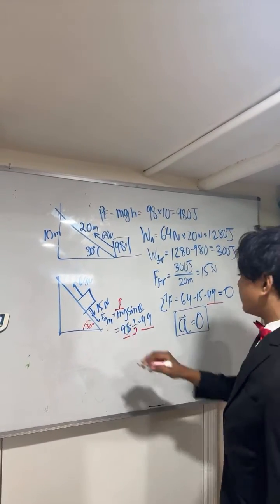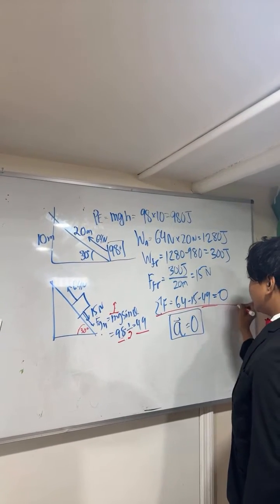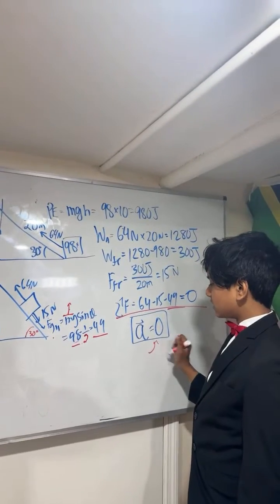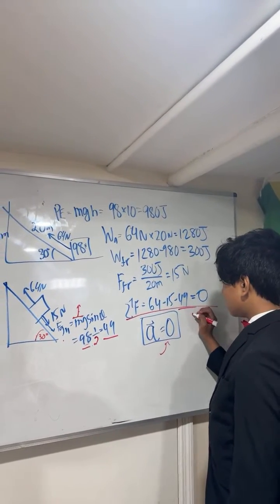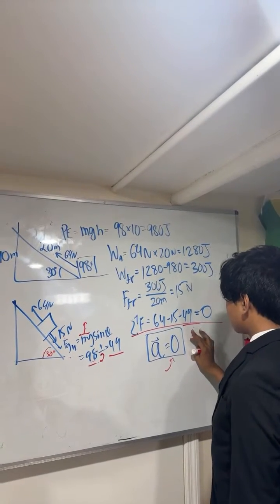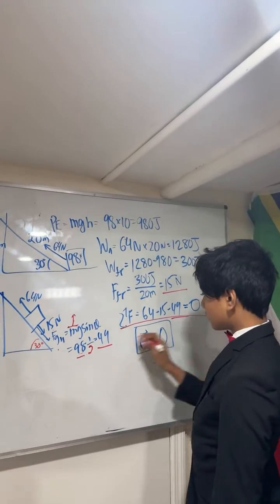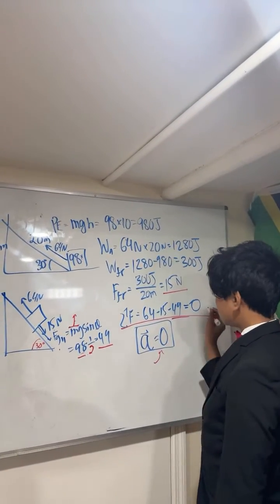49. So 49 is what? Okay, now you have to write acceleration is what? Well, the net force is zero. I think that... No, acceleration is... What did he write? He just found the net force. Okay, 64 minus 15. Okay, 15 came from where? Friction. And 49 came from here? Yes. And that gives us how much? Zero. Why zero?